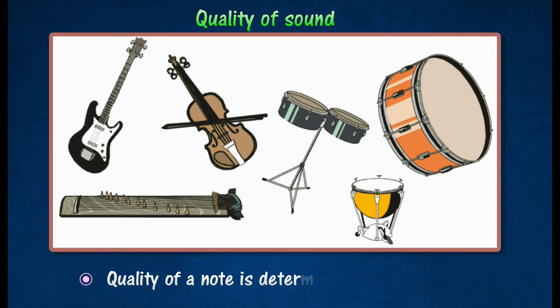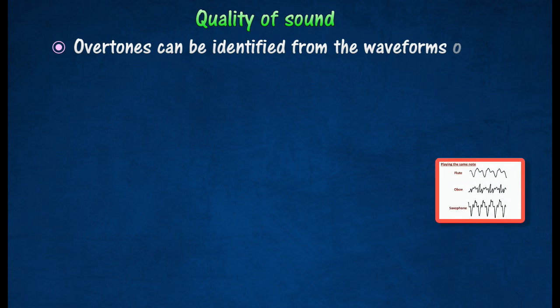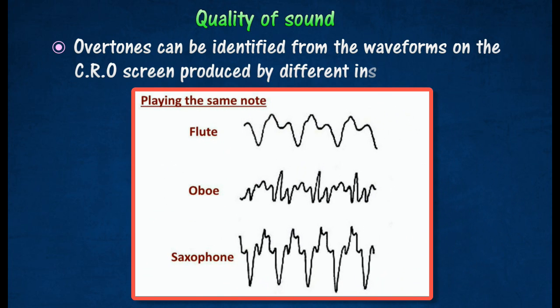The quality of a note is determined by the overtones. These overtones can be identified from the waveforms on the CRO screen produced by different instruments.